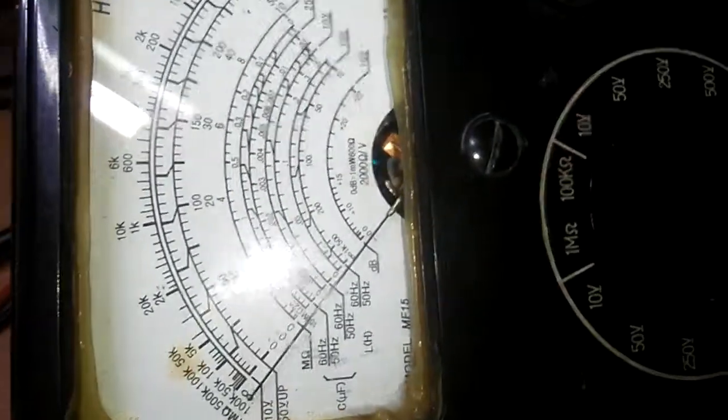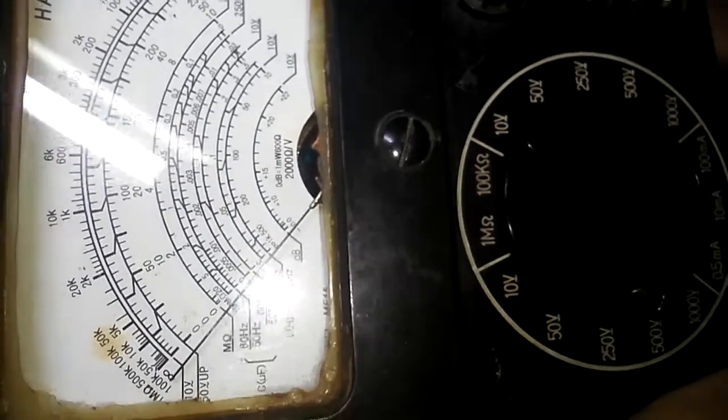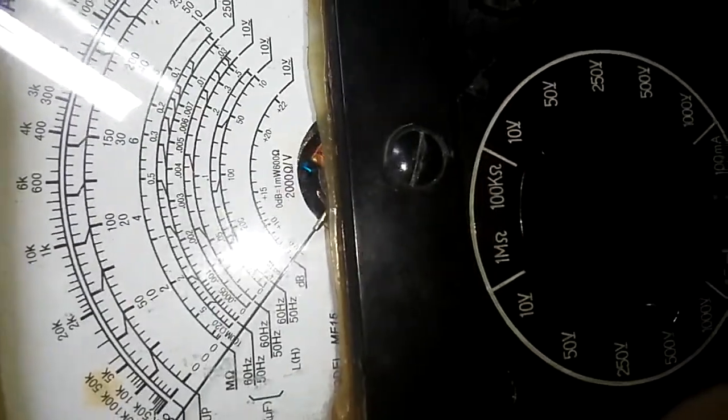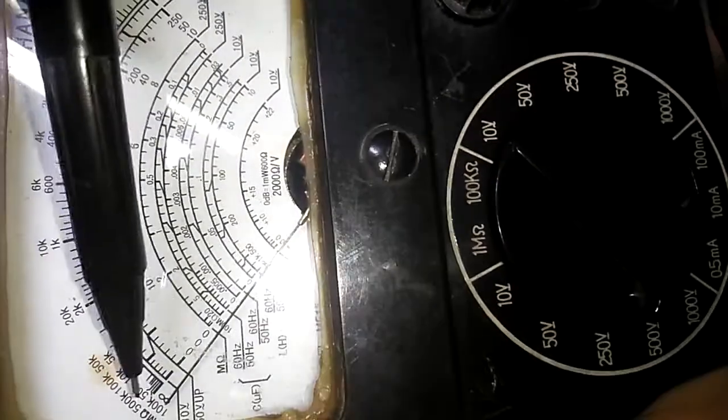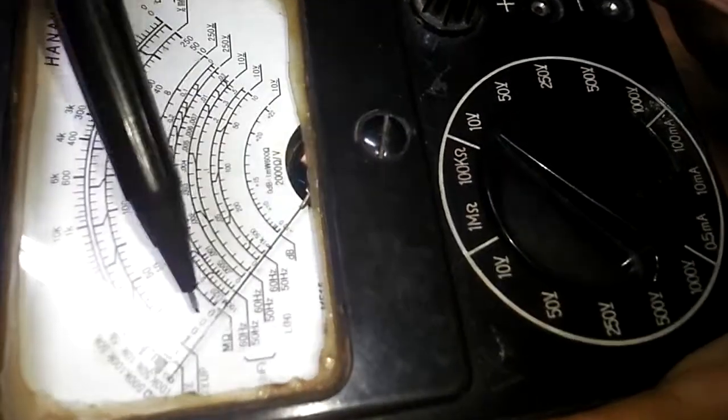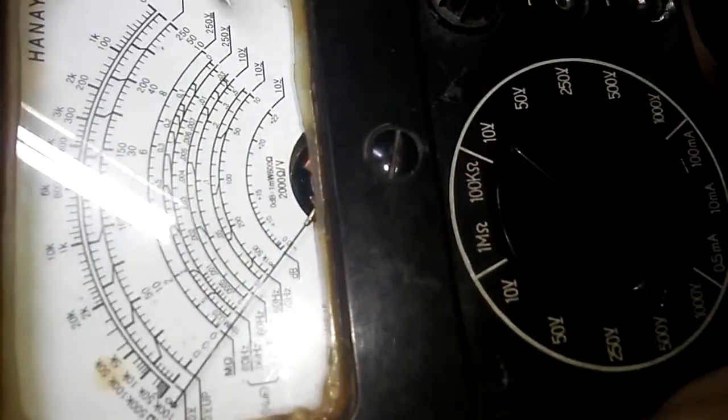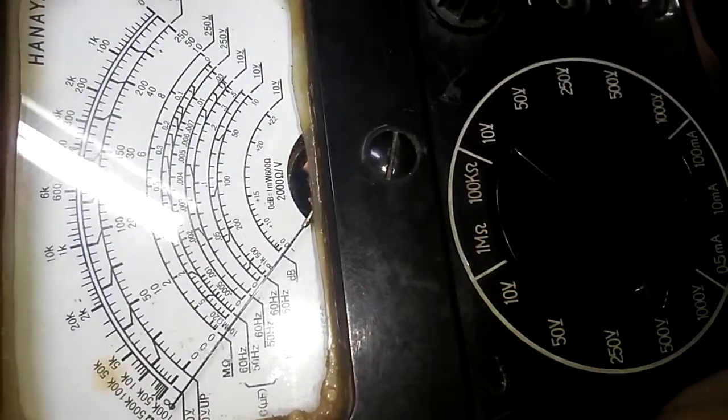It has to be adjusted to zero with these controls. There are two adjustments you have to make before taking a reading. This one can adjust the needle up to the zero line, and this one adjusts the resistance scale. You have one adjustment here and another here.